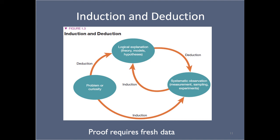And you can't really do both with the same dataset. You can't go out, gather a bunch of data, explore it, look at correlations and relationships, use that to develop a theory, and then say 'I'm going to test my theory with the same data.' Well, you already know that data produced this theory. You've got to use your theory to make a prediction and investigate it with new data.